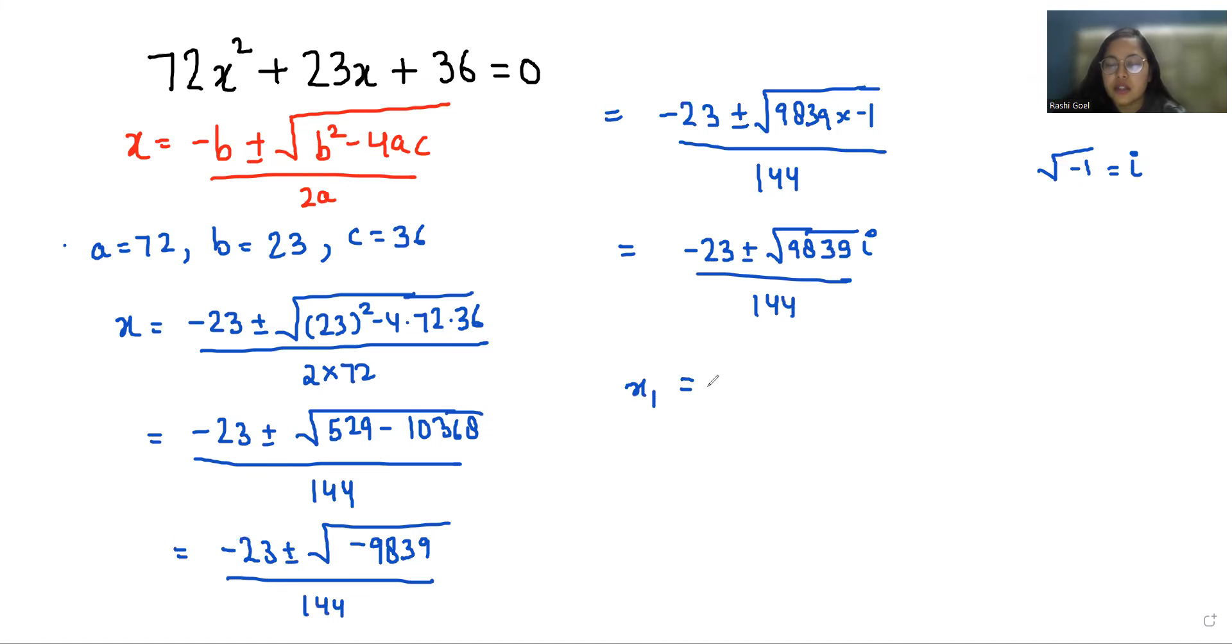So x1 is negative 23 plus under root 9839 iota by 144, and x2 is negative 23 minus under root 9839 iota by 144.